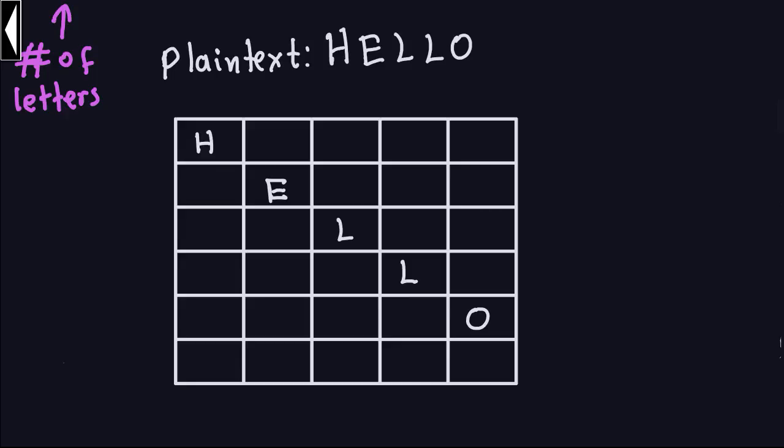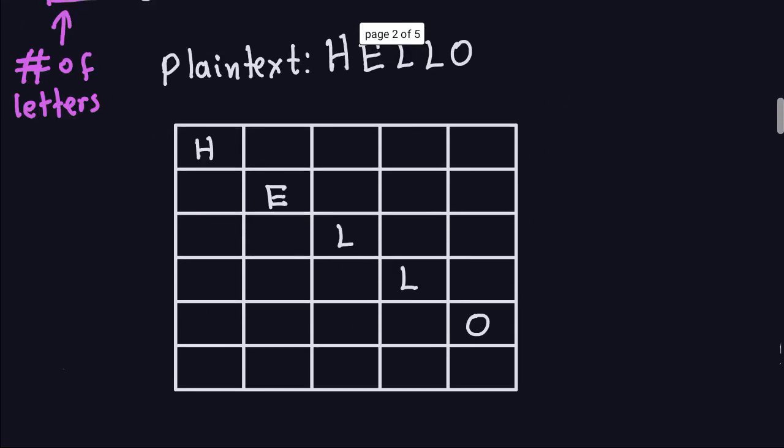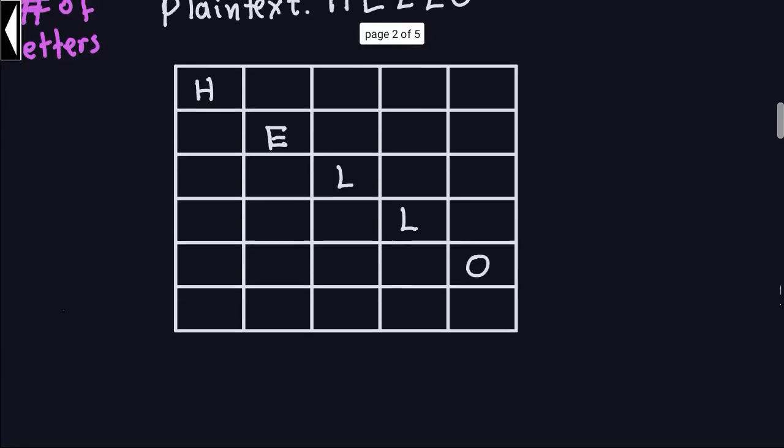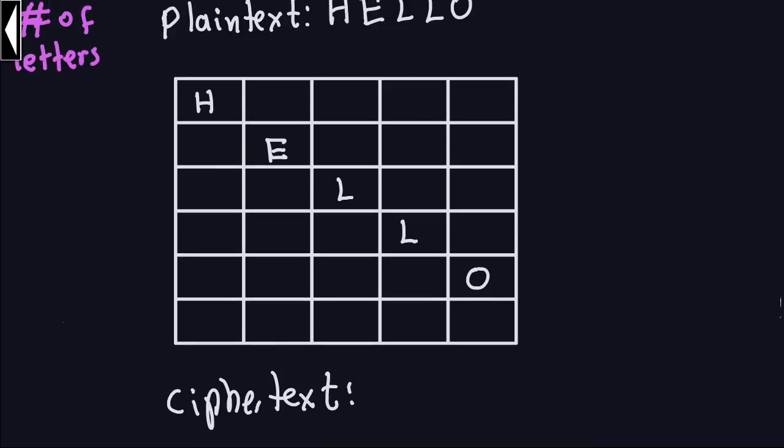So if I were to encrypt this message, remember what do you do? You read the rows. So if you read the rows, you say H, E, L, L, O. So the ciphertext in this case, if you read the rows, the ciphertext reading the rows from top to bottom, left to right will be H, E, L, L, O.